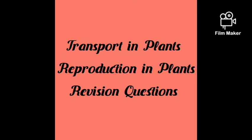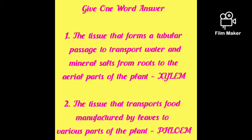Hello, good morning students. Let's have some revision questions based on transport in plants and reproduction in plants. Number one: the tissue that forms a tubular passage to transport water and mineral salts from roots to the aerial parts of the plant is called xylem. Number two: the tissue that transports food manufactured by leaves to various parts of the plant is phloem.